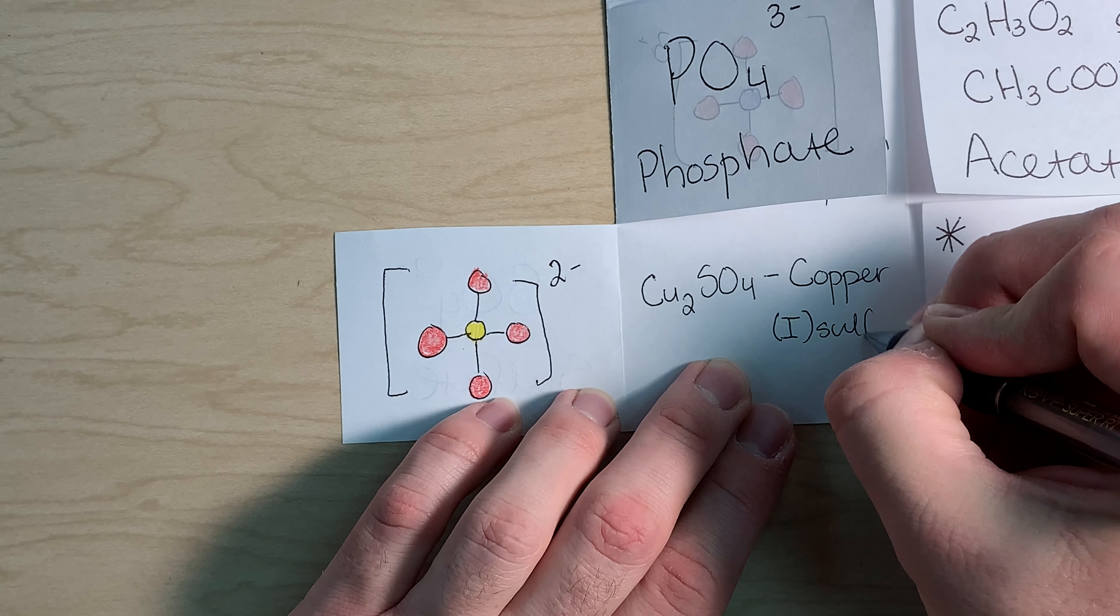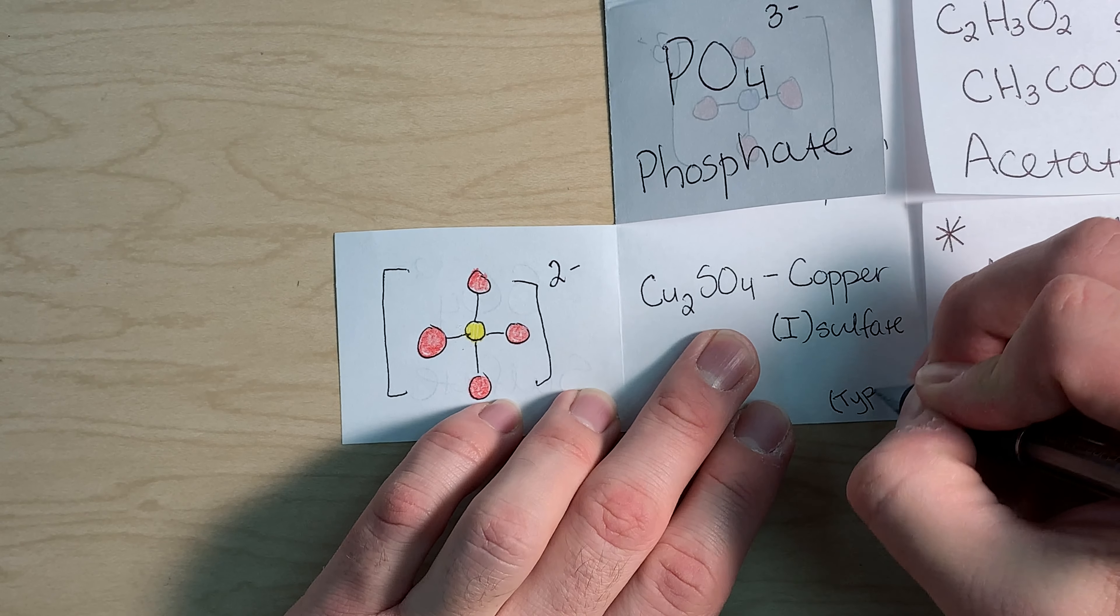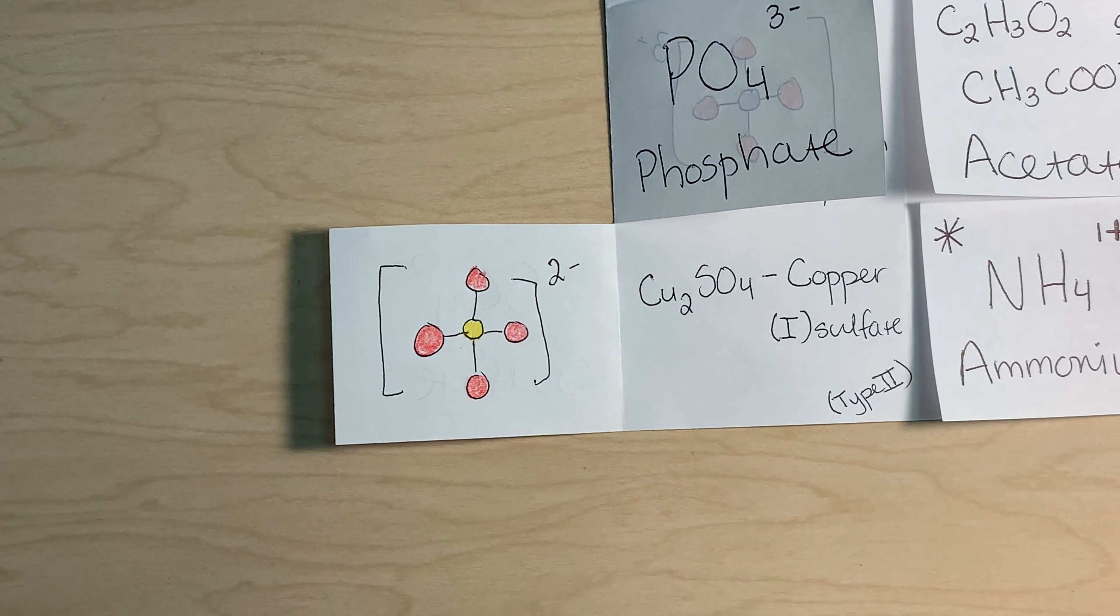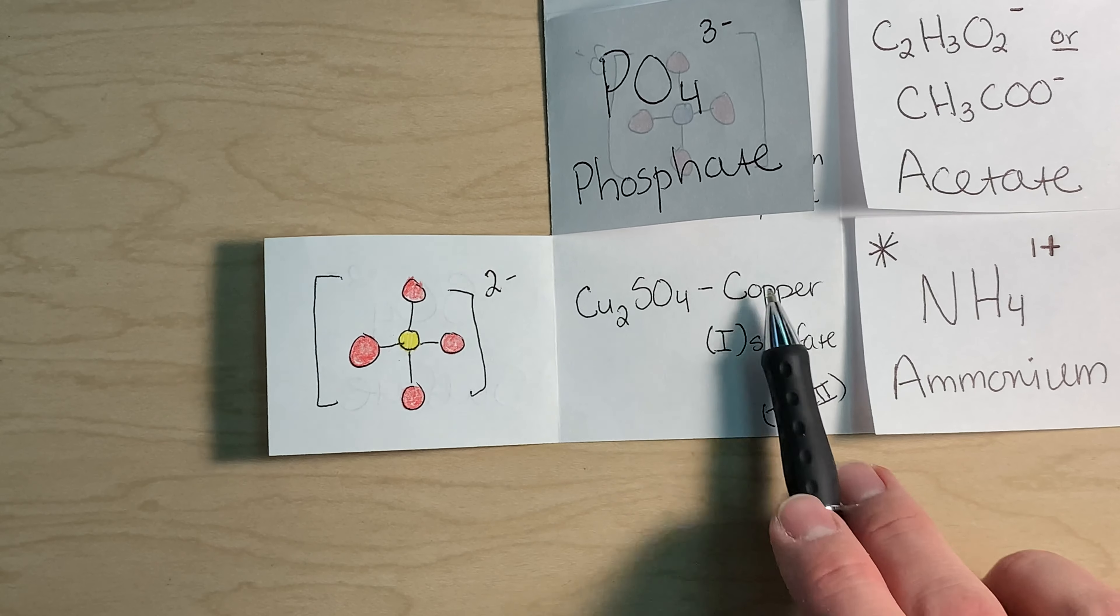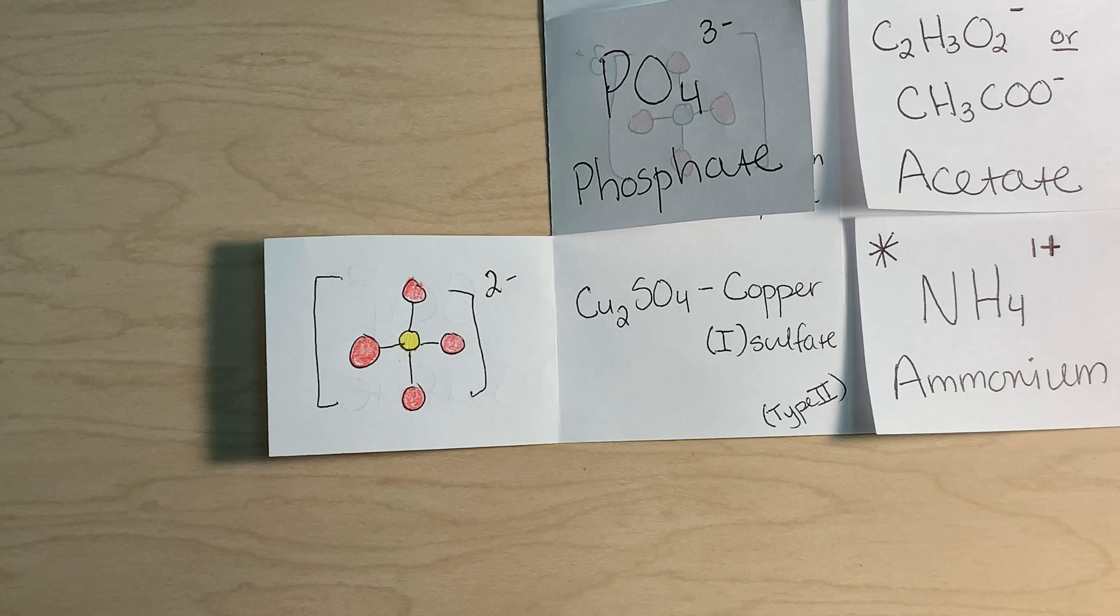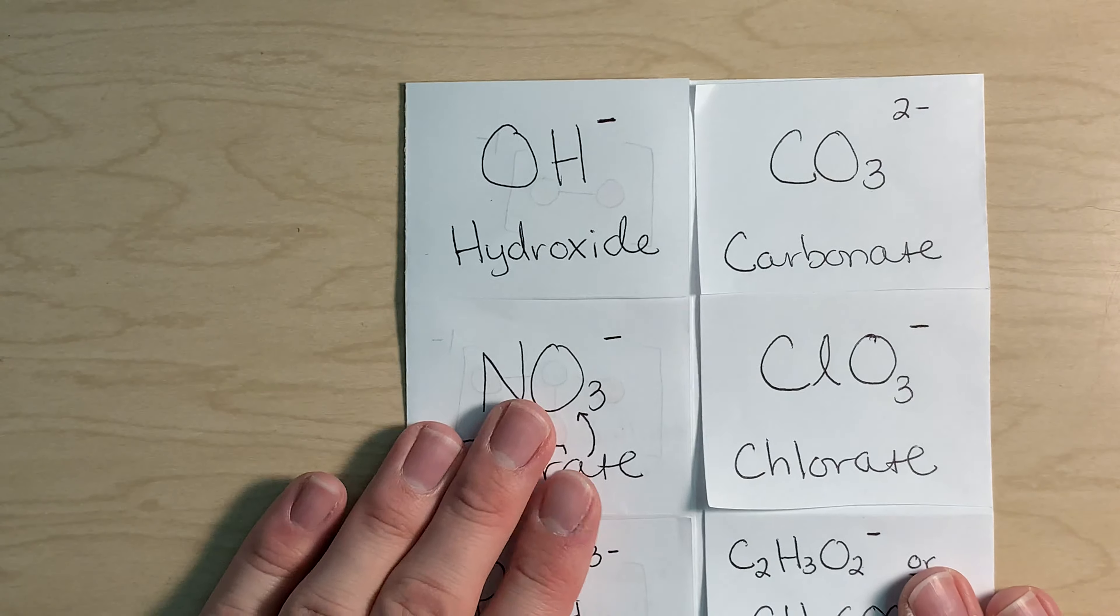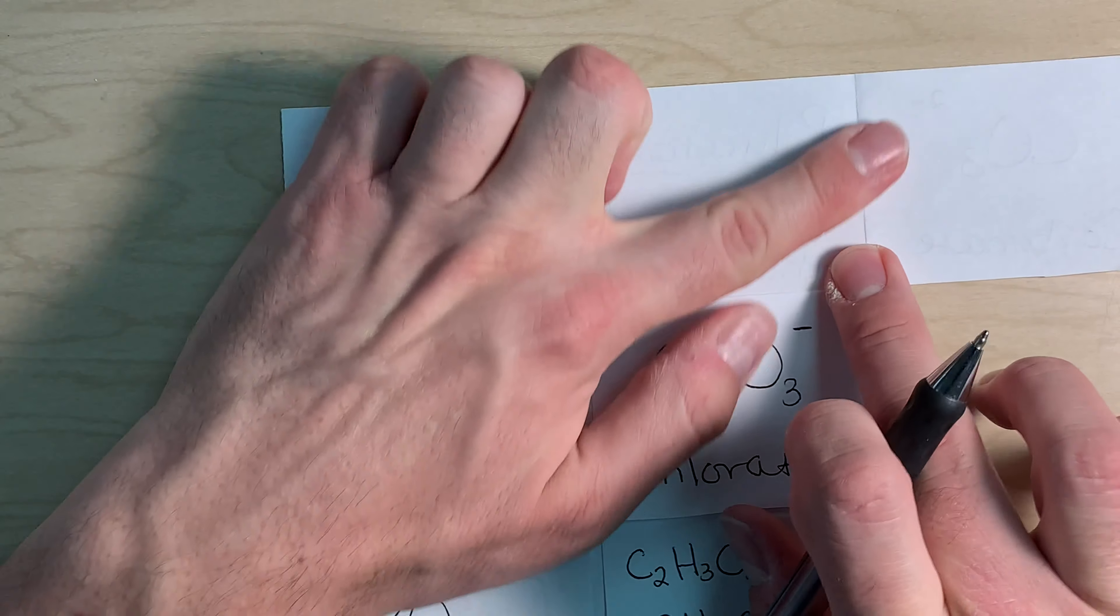We're going to throw a wild one in here. Cu2SO4. And that is copper, Roman numeral one, sulfate. And I'm going to put in parentheses type two, Roman numeral two. You'll know what that means by the end of the week, but I want to make sure that we have an example here. So again, copper with sulfate comes out. We write copper and sulfate. All right.